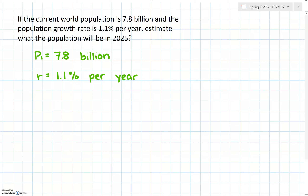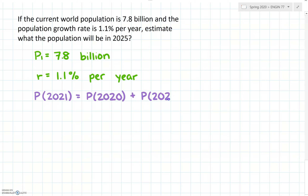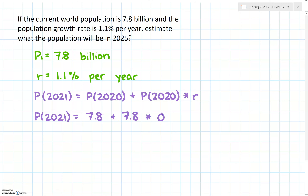We know what the population is in 2020, and we can use that information to calculate what our population will be in 2021. So the population in 2021 is equal to p2020 plus p2020 times our rate of change r, which is 0.011. So p2021 equals 7.8 billion plus 7.8 times 0.011, which gives a population projection of 7.8858 billion.